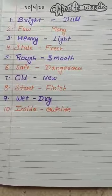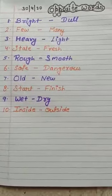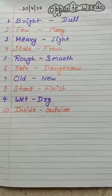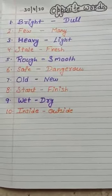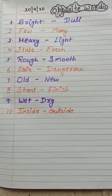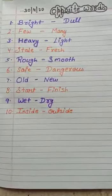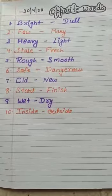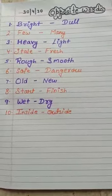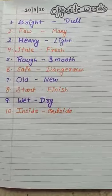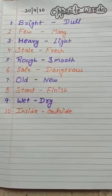So, let's revise: bright, dull. Few, many. Heavy, light. Stale, fresh. Rough, smooth. Safe, dangerous. Old, new. Start, finish. Wet, dry. Inside, outside.